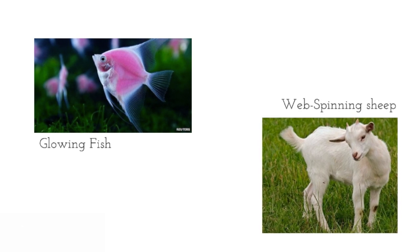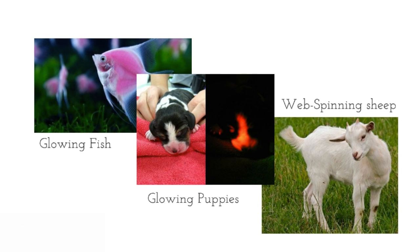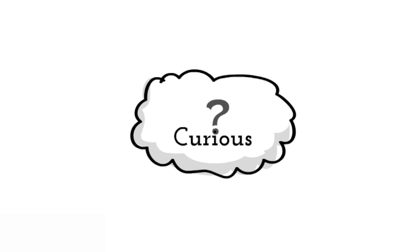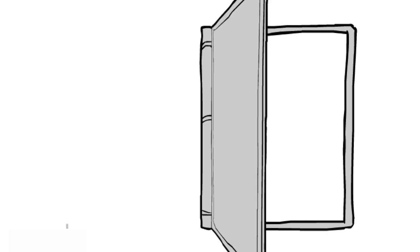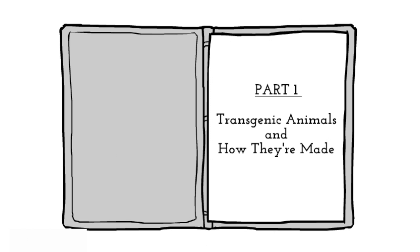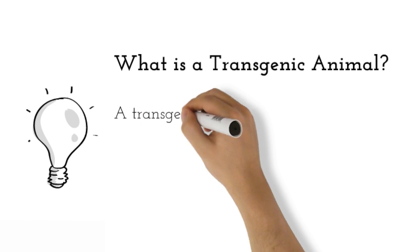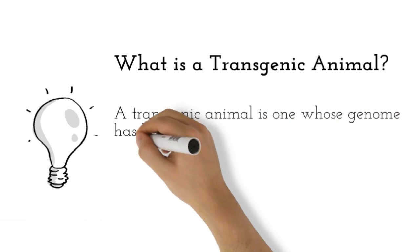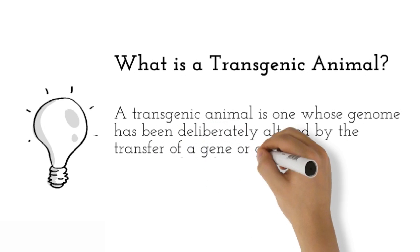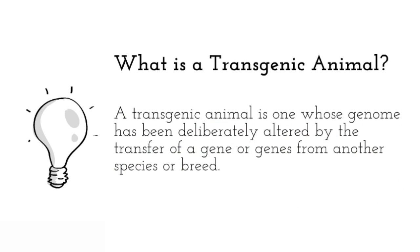Transgenic Animals — we're here to talk about how they're made. You're probably curious, so we'll teach you what they're all about. A transgenic animal is one whose genome has been deliberately altered by the transfer of a gene or genes from another species or breed.